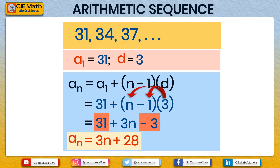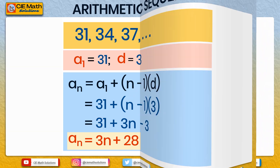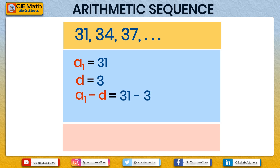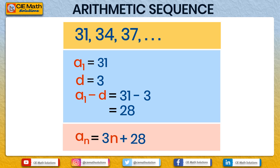Now let us try the shortcut way of finding the general rule. Again, a1 = 31 and d = 3. Subtract the first term and the common difference: a1 − d = 31 − 3 = 28. The general term is then the common difference multiplied by n, which is 3n, plus that difference of 28. So an = 3n + 28.